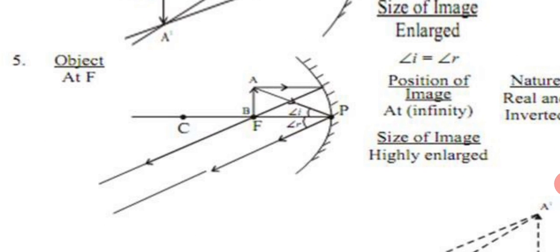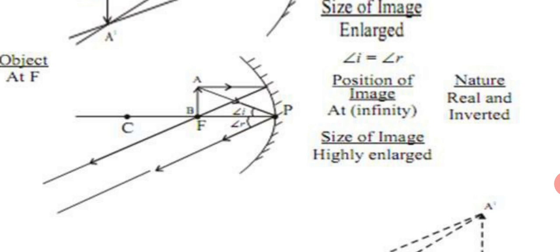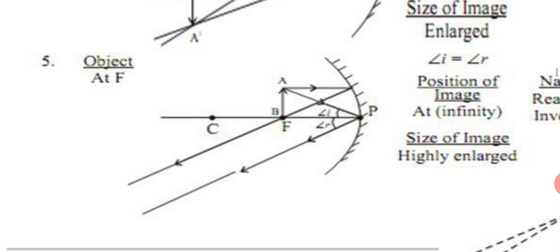Now we talk about condition number fifth: when object is placed at focus. Same rules apply - one parallel to principal axis reflects through focus, one comes to P making angle of incidence and reflected angle. But these two lines are parallel, they won't meet nearby, they meet at infinity. Position of image at infinity, nature real and inverted, size highly enlarged because we don't know where they meet, but wherever they meet, image size will be very large.